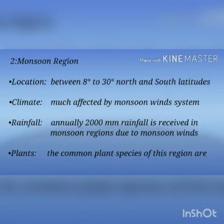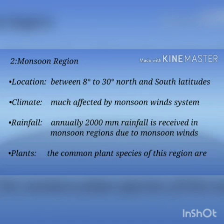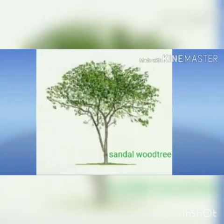The second one is the monsoon region. Location: this region is located between 8 degrees to 30 degrees north and south latitudes. Climate: the climate is much affected by the monsoon wind system. Rainfall: annual rainfall of 2000 mm is received in monsoon regions due to monsoon winds. Plants: the common plant species of this region are sandal, teak and bamboo.